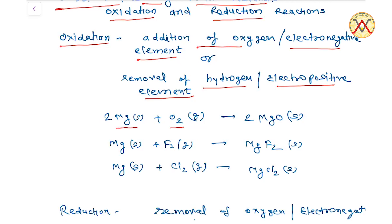For Example, Magnesium + O₂ को react कराने पर हमें product मिलता है MgO, यानि Magnesium Oxide। यानि कि Magnesium में Oxygen का Addition हुआ - यह एक example है Oxidation Reaction का, Addition of Oxygen।